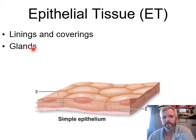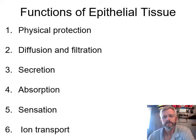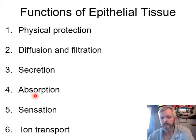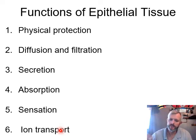Epithelial tissues are linings and coverings — also glands. The organs of the endocrine system are epithelial tissues. Their functions include physical protection, diffusion and filtration, secretion, absorption — urinary and digestive tract — sensation relating to the nervous system, and ion transport. These epithelial tissues are interfaced with the external environment and are very important in getting stuff in and out of the body. You've got to cross a layer of epithelial to get either in or out.